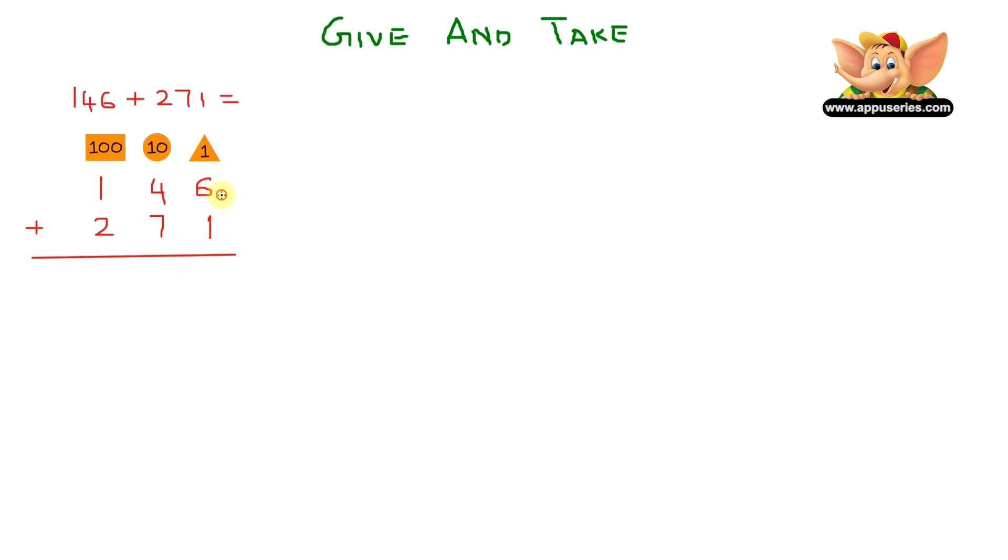Let's count the ones first. So we have 6 plus 1 equals 7. Let's move on to the tens. We have 7 plus 4 equals 11. This means we have 11 tens. Now 11 tens can be written as 10 tens plus one ten. So we know that 10 tens equals 100.